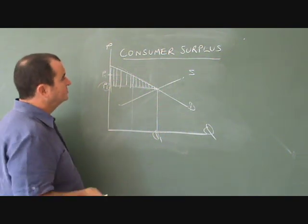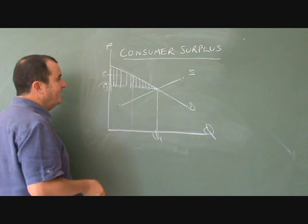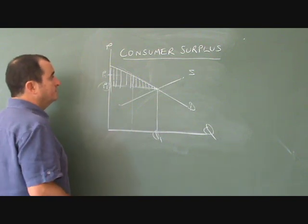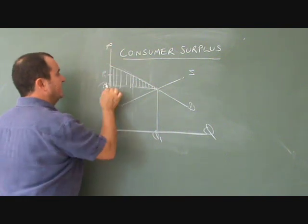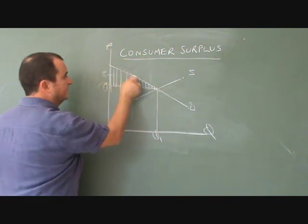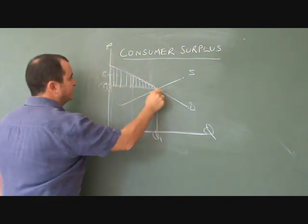And put simply, consumer surplus will be an area on the diagram bordered by the demand curve, the price axis and the price level. That's the demand curve, the price axis and the price level.